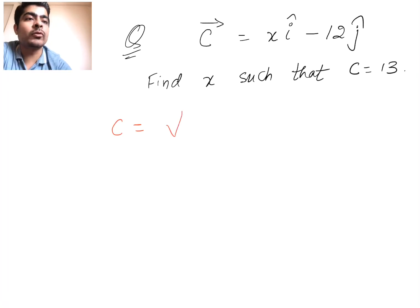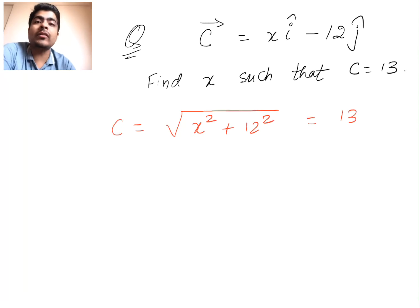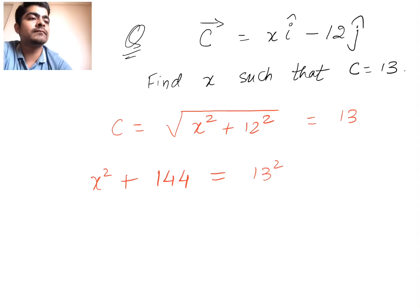So c will be equal to root of x squared plus 12 squared. Squaring, so c is basically equal to 13. Now when you square on both the sides, x squared plus 12 squared means 144, that will be equal to the square of 13. 13 squared is 169. So x squared will be 169 minus 144, so this will be equal to 25.